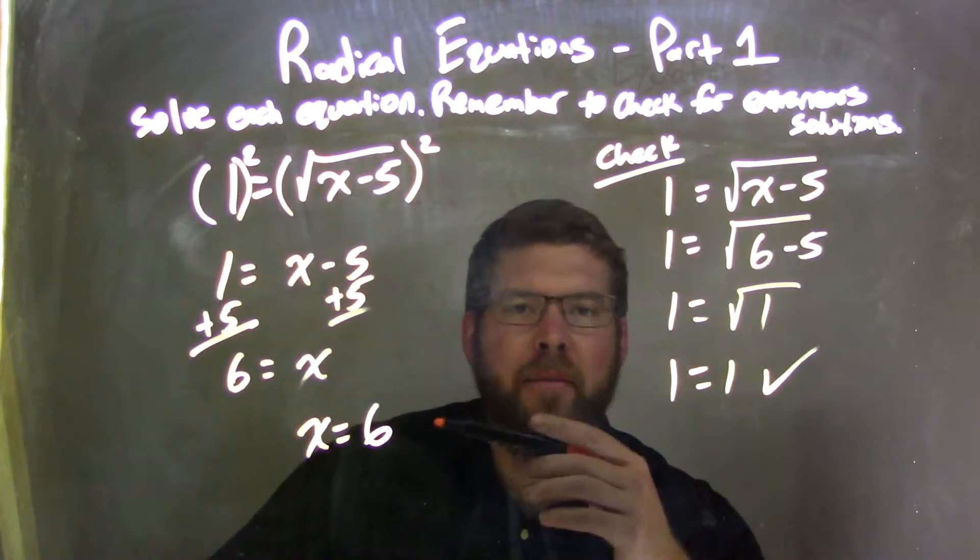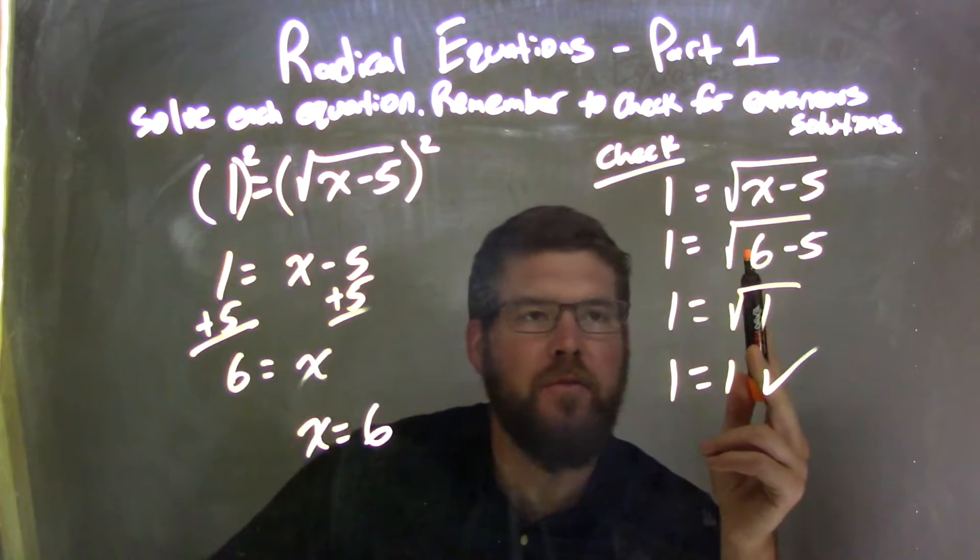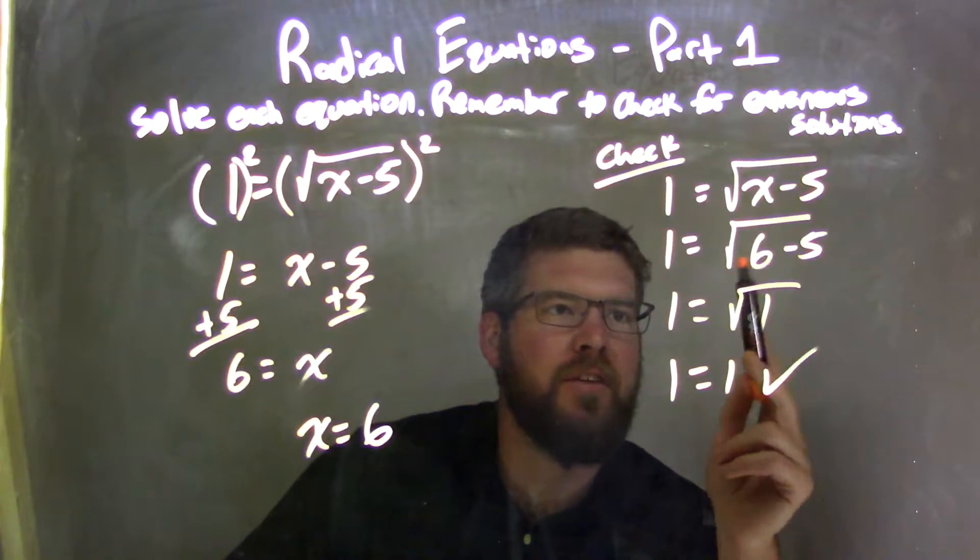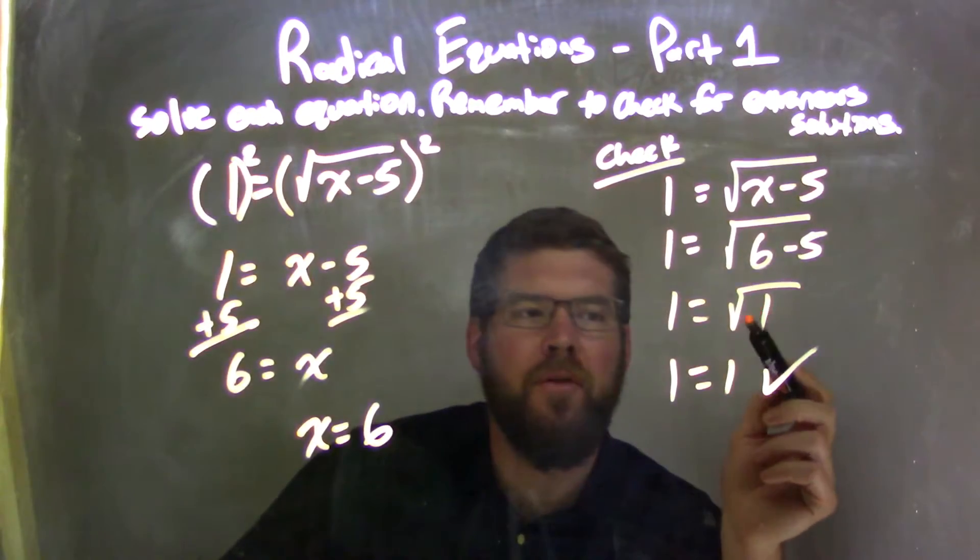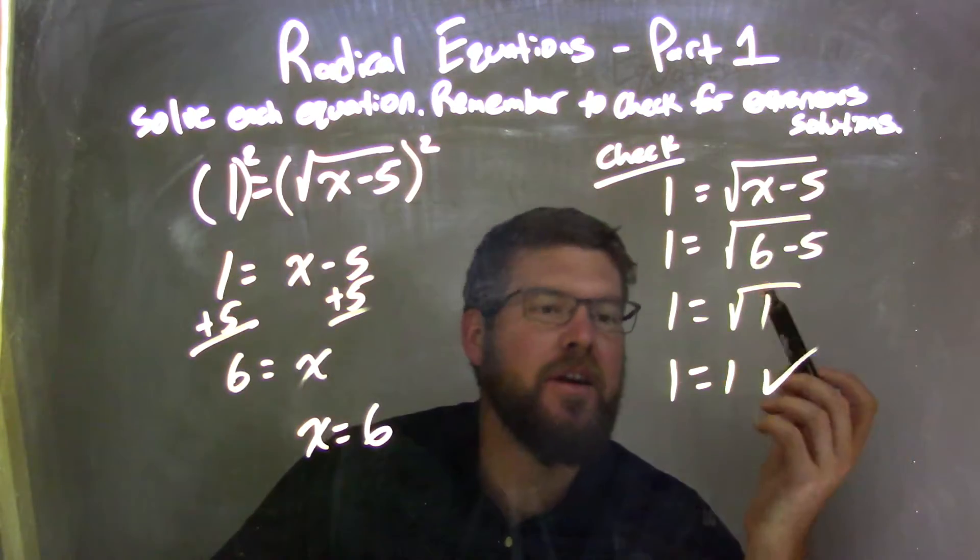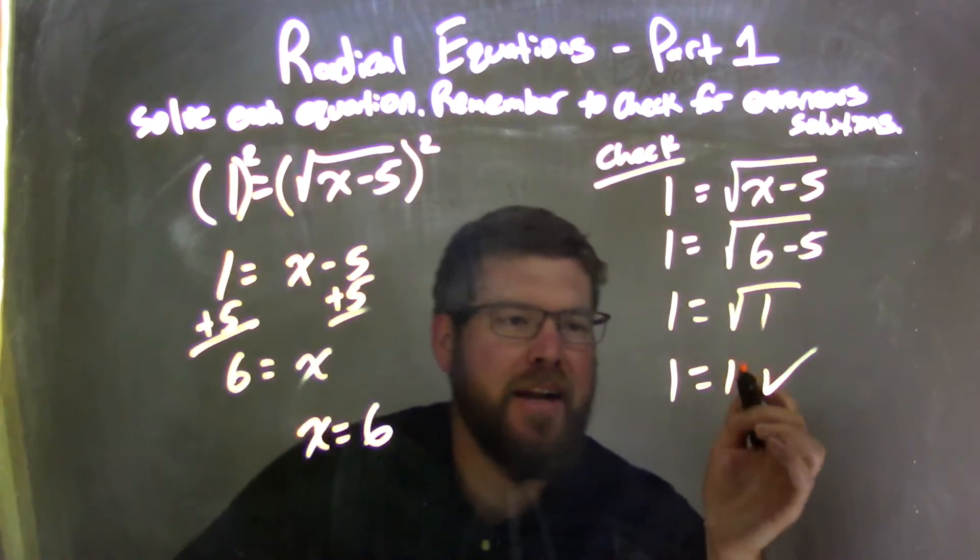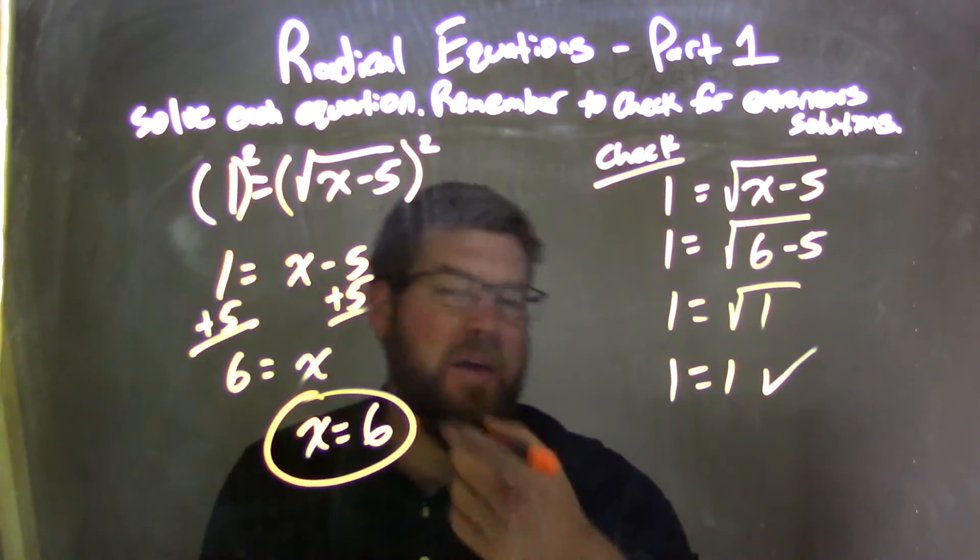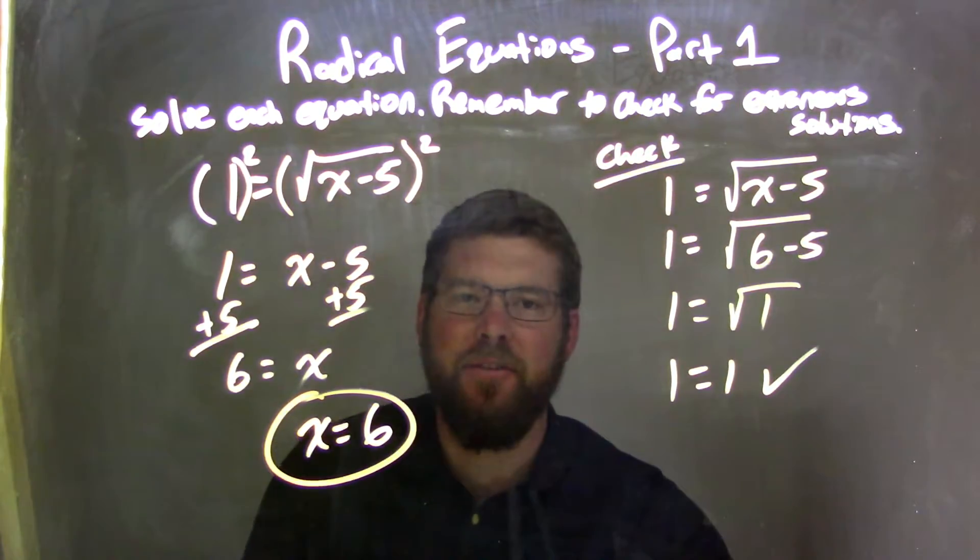Then I had to check my answer, so I rewrote my equation. I plug 6 in for x, so now I'm left with 1 equals the square root of 6 minus 5. 6 minus 5 is 1. Square root of 1 is 1. So my left and right are equal. Now I'm confident and can state that there are no extraneous solutions—x equals 6 is my final answer.